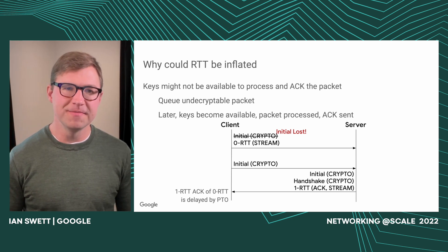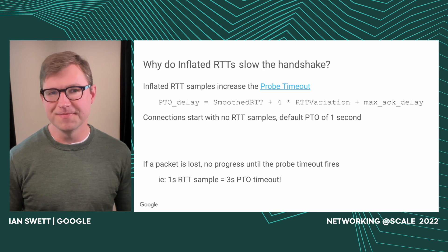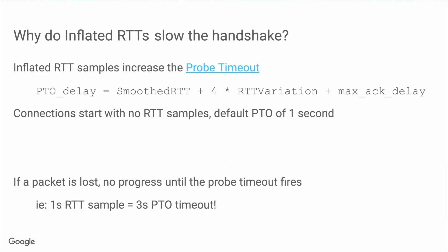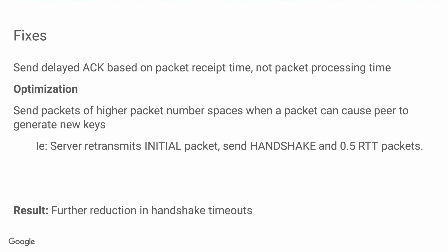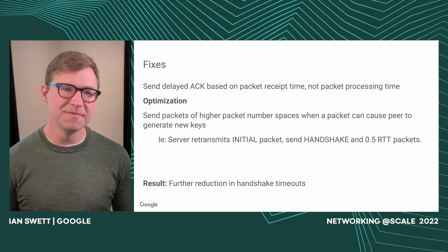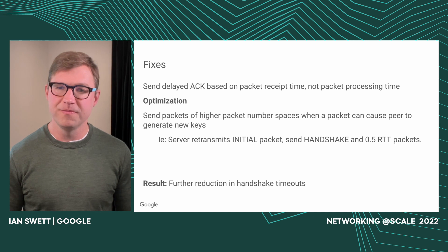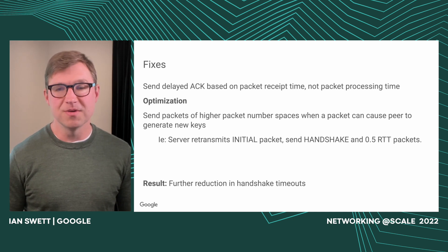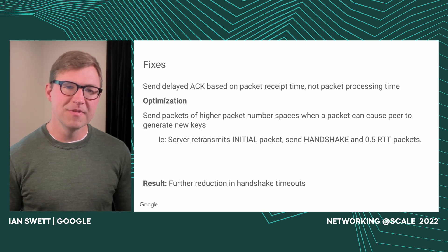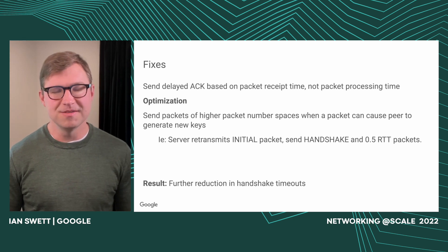Why do inflated RTTs slow down the handshake? They're incorporated into the probe timeout calculation. If a packet is lost, the probe timeout becomes very important to making sure the handshake makes forward progress. If the very first RTT sample ends up being a second, you end up with a three-second probe timeout. The fixes: first, send the delayed ACK based on the packet receipt time, not the processing time. As an optimization, we always send packets of a higher packet number space when possible, particularly when a packet can cause a peer to generate new keys, allowing them to process queued packets. For example, if a server retransmits an initial containing a client hello, also send handshake and half-RTT packets to ensure the newer packets generate the RTT sample. As a result, we had a further reduction in handshake timeouts and RTT was looking much better.